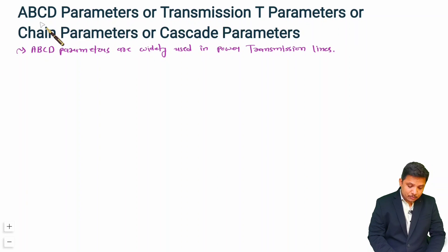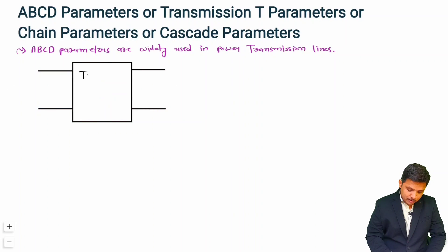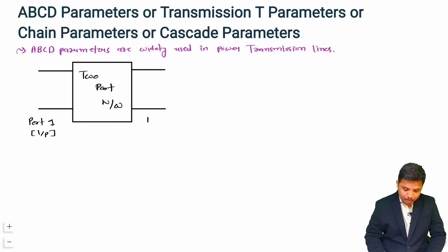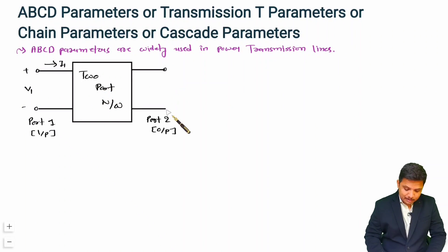Now I will explain how ABCD parameter is used in a two-port network. Let me draw a two-port network. Here we have a two-port network — port 1 is the input port and port 2 is the output port. At the input port we have voltage V1 and current I1 going inside the network. At port 2 we have voltage V2 and current I2 going inside — this is the standard two-port network.